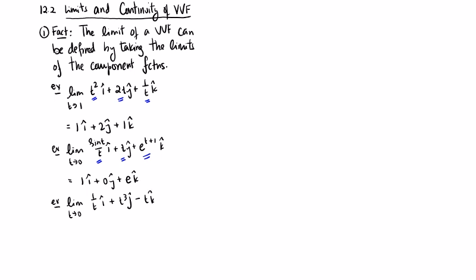that first limit, that first component right there, the 1 over t, as t goes to 0, that's undefined. So this whole thing is undefined because the limit as t goes to 0 of 1 over t is undefined.